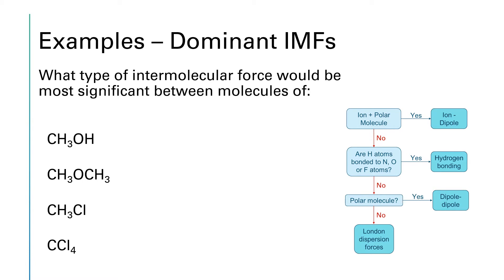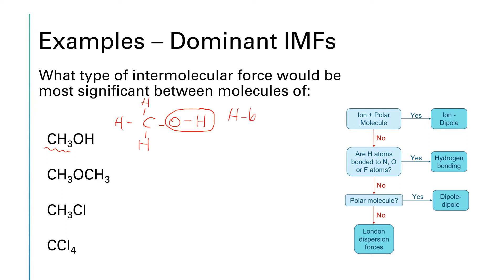The first compound to analyze is methanol, CH₃OH. The structure has a central carbon atom with an oxygen bonded to a hydrogen, and three additional hydrogens on the carbon. Looking at the flowchart: do we have an ion plus a polar molecule? No, nothing ionic here. Are hydrogen atoms bonded to a nitrogen, oxygen, or fluorine? Yes — the hydrogen is bonded to oxygen. So the dominant intermolecular force for methanol is hydrogen bonding.